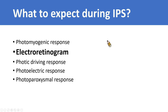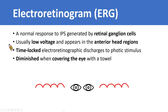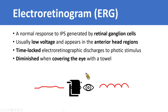Next, I am going to introduce the electroretinogram. Electroretinogram is a normal response to IPS generated by retinal ganglion cells. The discharges are of low voltage and appear in the anterior head regions. It is also time-locked to the flash stimulus. When you want to make sure whether the discharges are electroretinogram, we can use a towel to cover the eye. As the animation demonstrates, if the discharges disappear following covering of the eye, we can confidently identify electroretinogram without misdiagnosing it as other discharges.